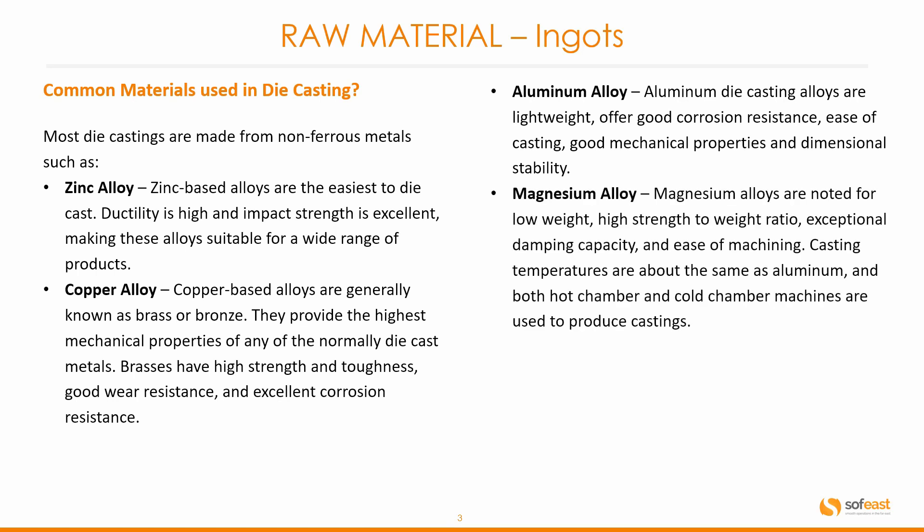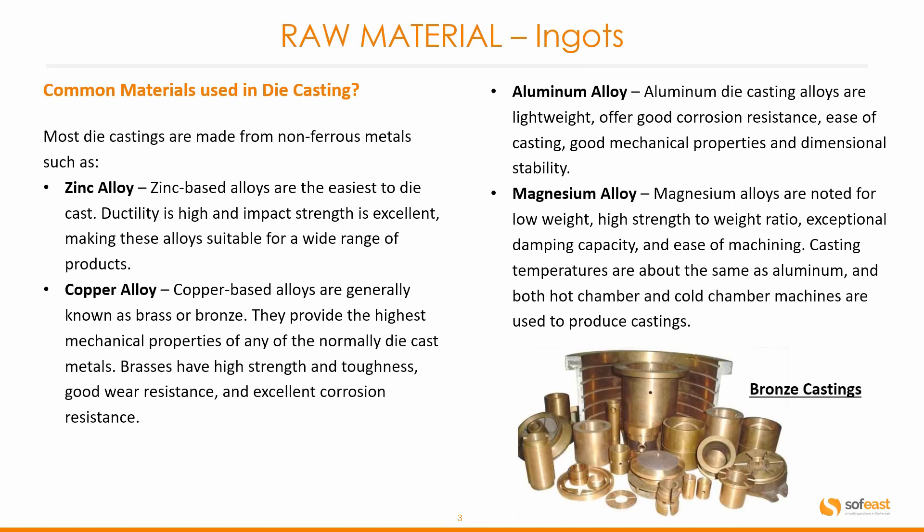Magnesium alloys are noted for low weight, a high strength-to-weight ratio, exceptional damping capacity, and ease of machining. Casting temperatures are about the same as aluminium. Both hot chamber and cold chamber machines are used to produce castings — we will cover the difference between these in a later video. Here is an example of some bronze cast products.